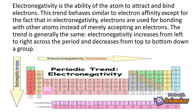Electronegativity is the ability of the atom to attract and bind electrons. This trend behaves similarly to electron affinity, except that in electronegativity, electrons are used for bonding with other atoms instead of merely accepting an electron. The trend is generally the same: electronegativity increases from left to right across a period and decreases from top to bottom down a group.